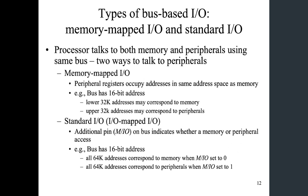Memory mapped IO and standard IO: this is for when we connect the microprocessor or microcontroller to IO devices, like we will do in our second lab, where we will connect the Arduino to an I2C device. For that kind of situation, we have two options: one is memory mapped IO, and one is standard IO, depending on which processor you choose and its internal architecture.